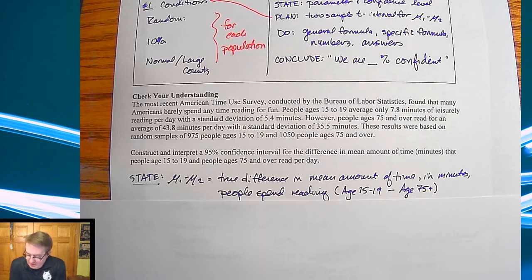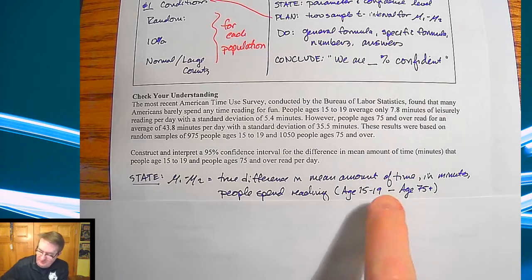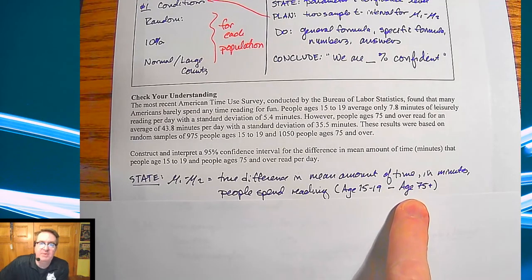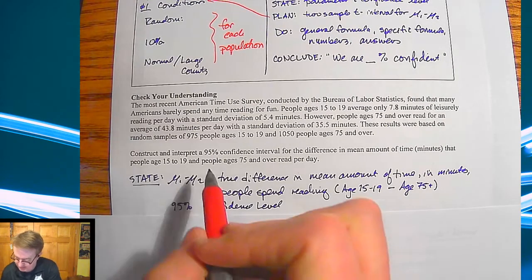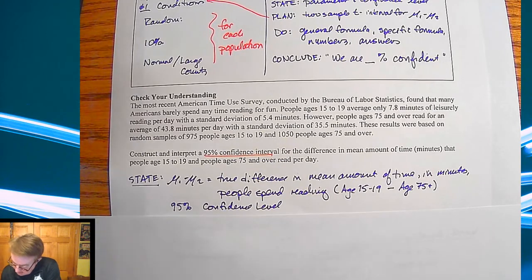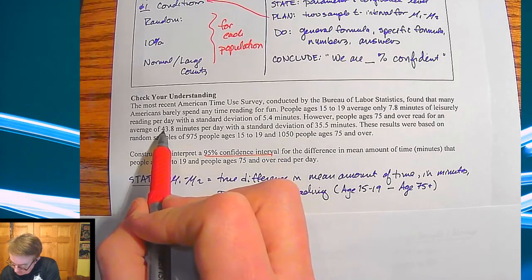μ1 - μ2 is the true difference in mean amount of time in minutes people spend reading between ages 15 to 19 and age 75+. So I'm going to take the ages of 15 to 19 minus the amount of time people are reading at age 75+, and we're going to do that at a 95% confidence level because that is what they tell us here. We have average and standard deviation for both groups.